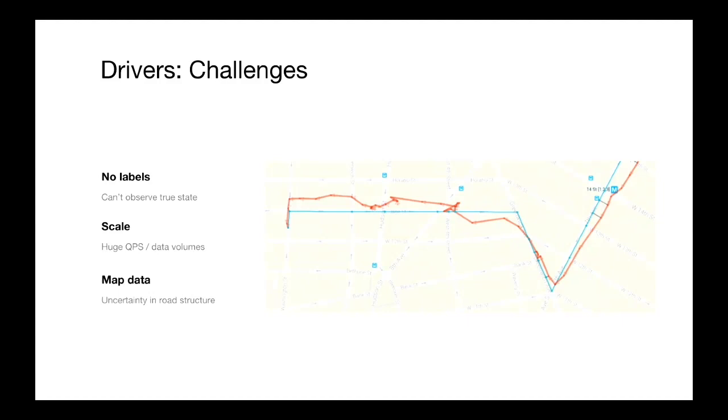We also have issues with scale. This is a super fundamental service for Uber as a platform. You can imagine we're doing quite a bit of this. I don't have the number of hours of GPS data that we map match every day, but I imagine it's rather high. Handling that effectively is a big challenge. And then lastly, of course, the world being an uncertain place, we can't assume that our maps are perfect.